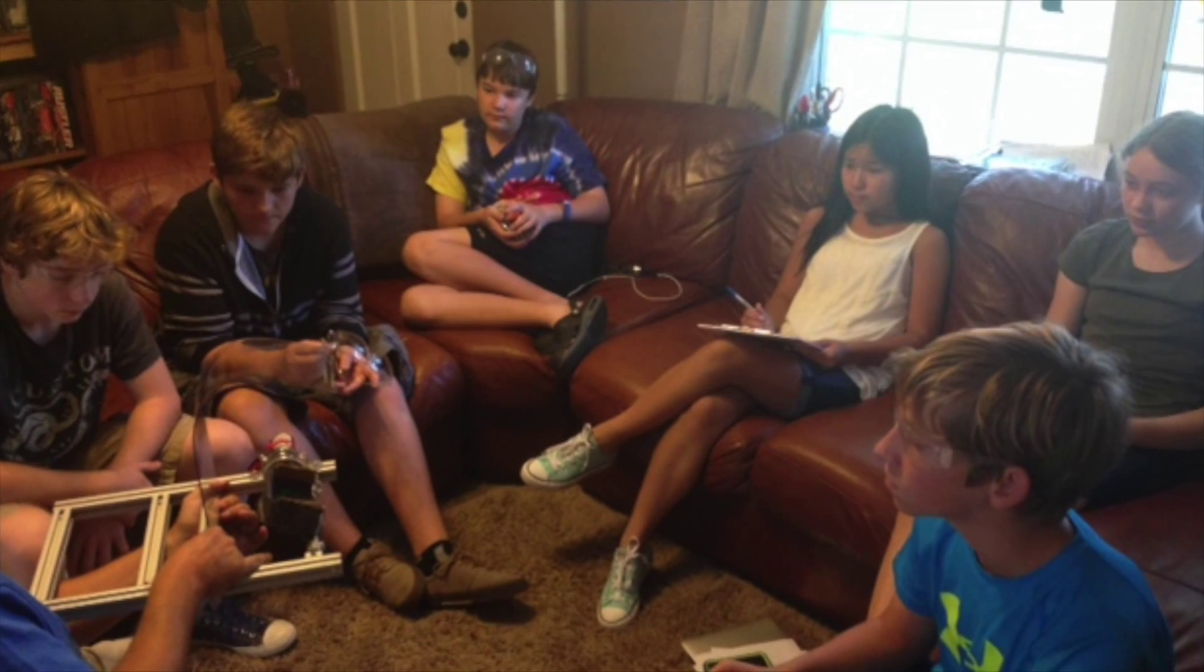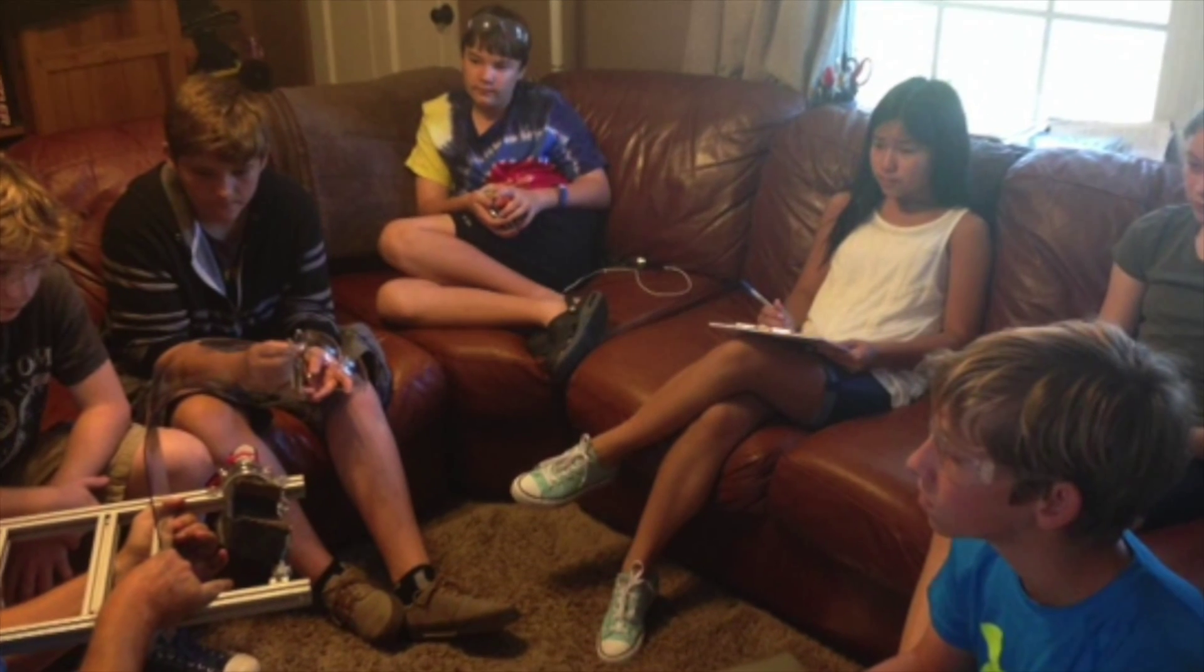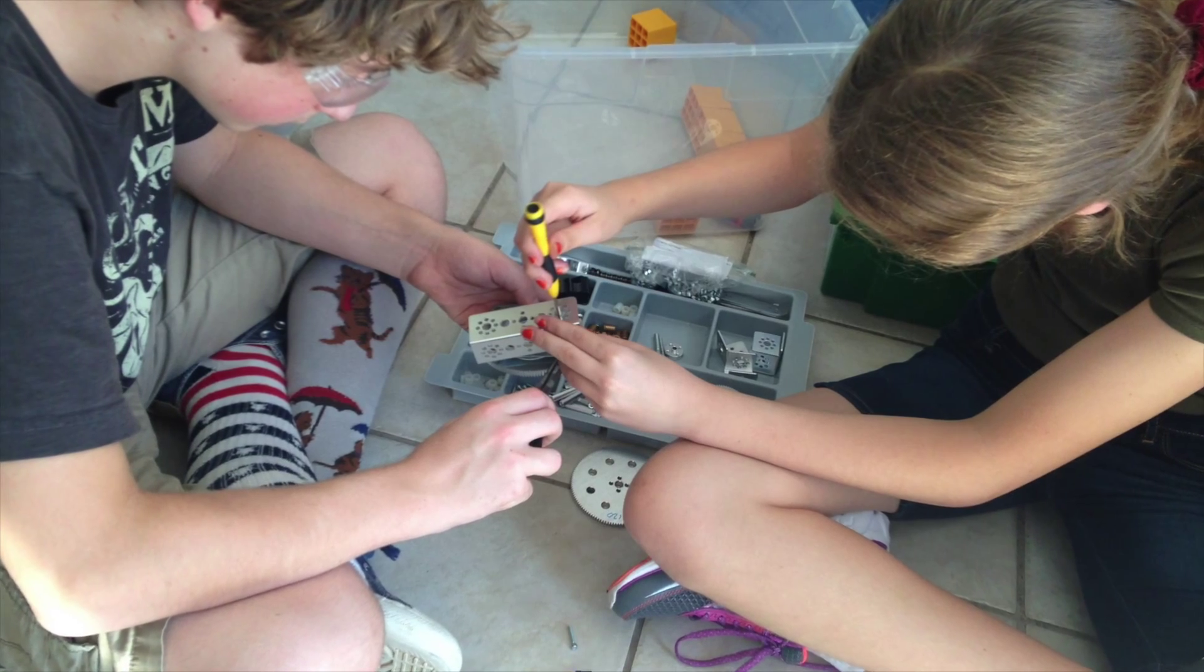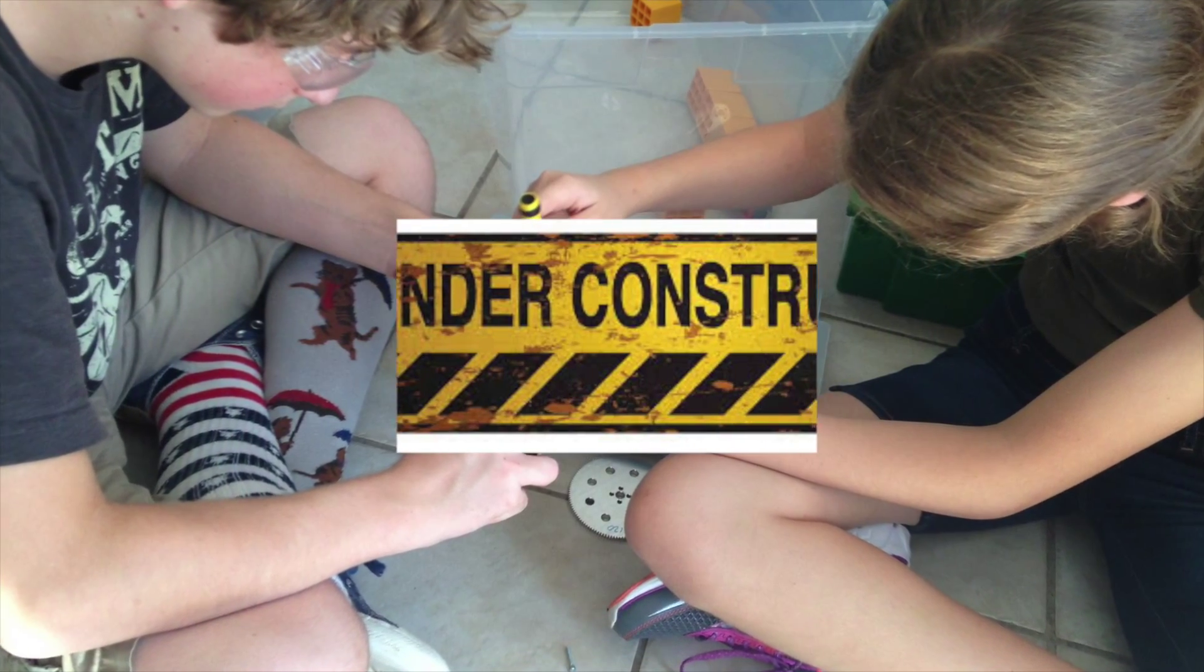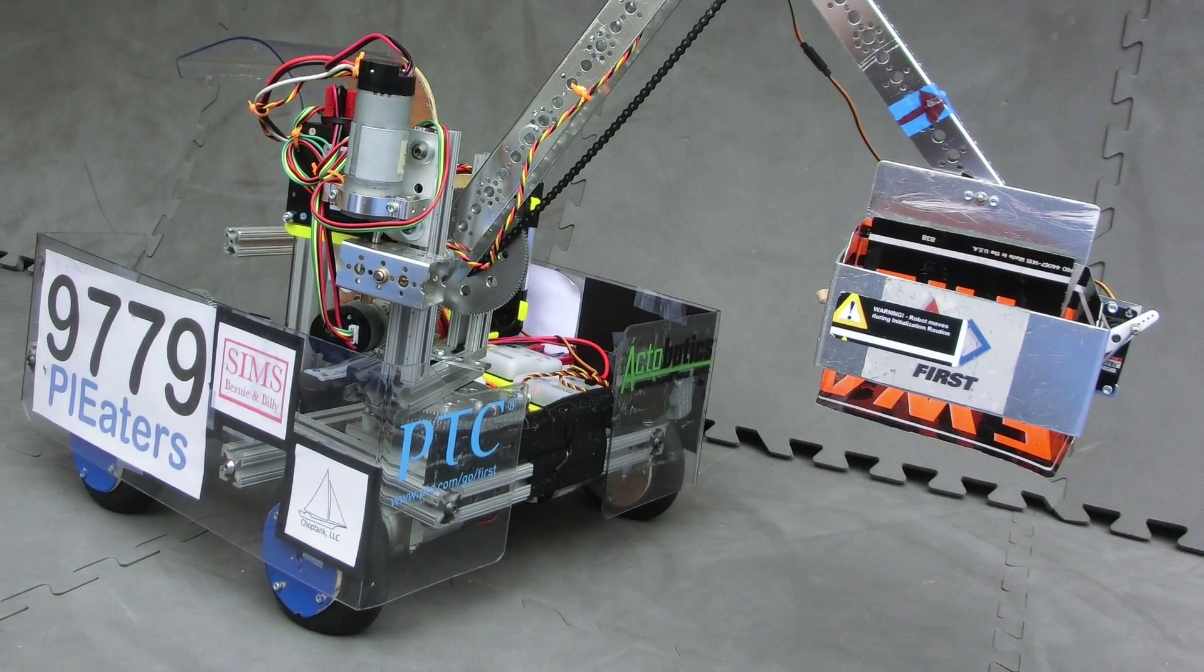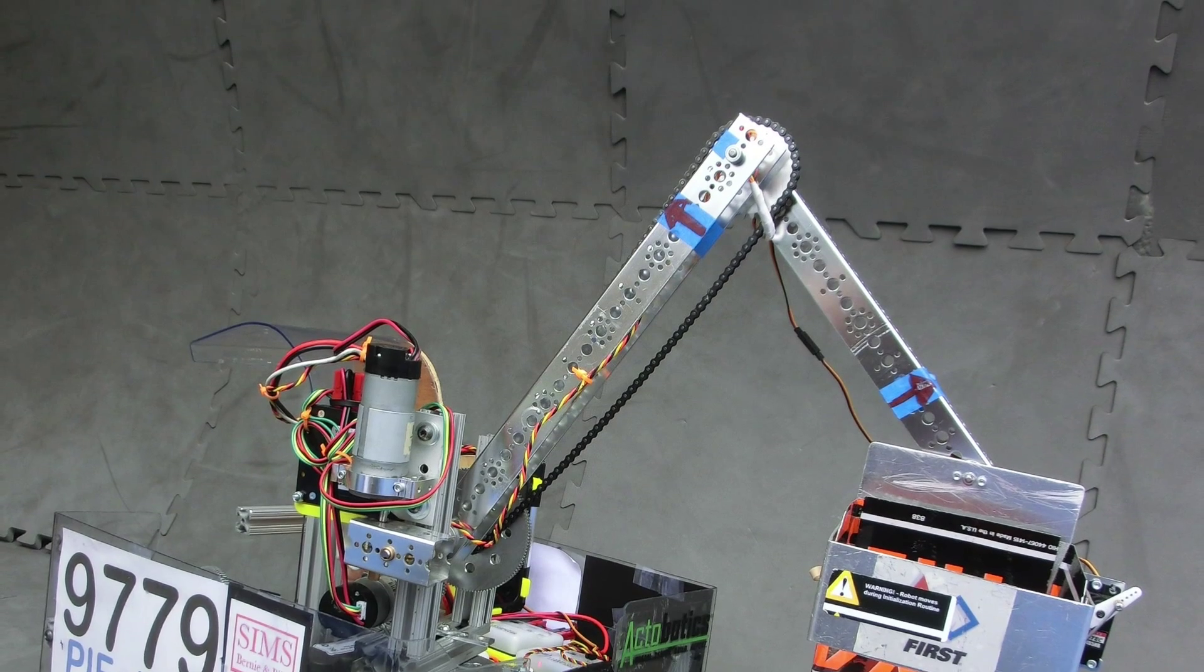One important lesson we've learned is that things always take longer than anticipated, and our motto quickly became build it, take it apart, build it again, keep repeating. As such, the robot design will continue to be a work in progress for the remainder of the season, as we hope to use the arm to release climbers and deliver the hook to pull up the bar during the endgame.